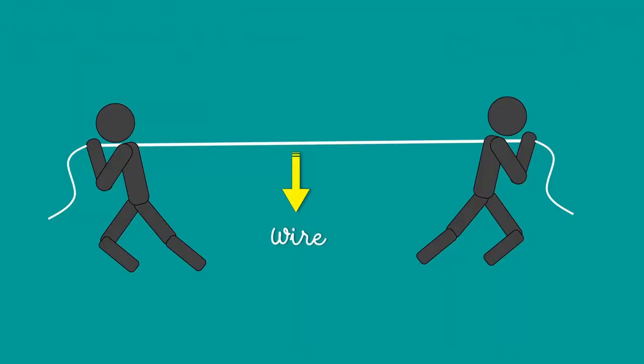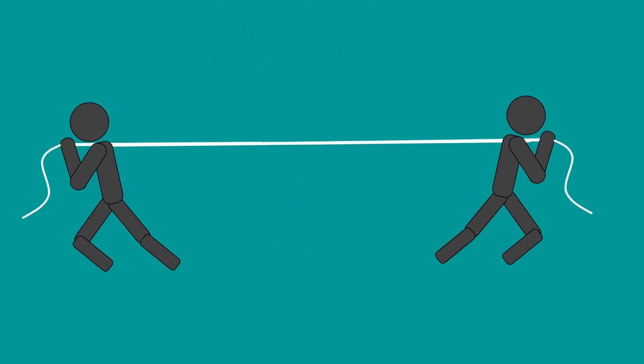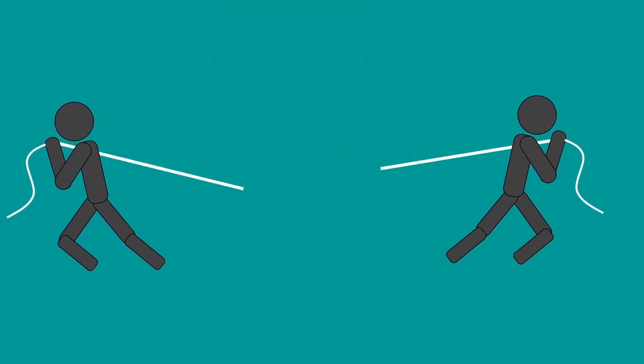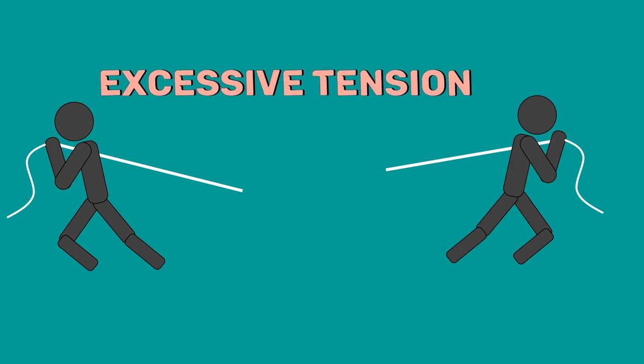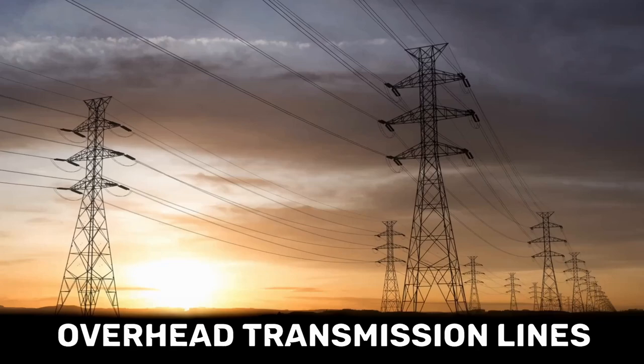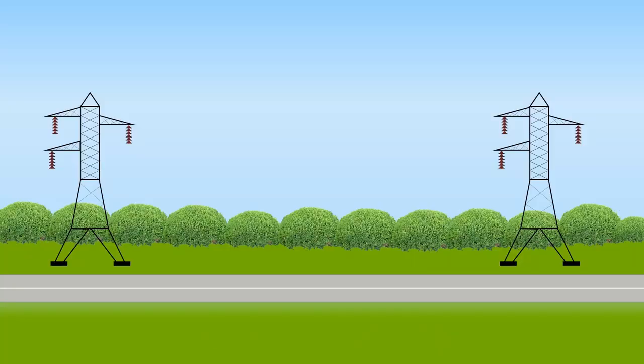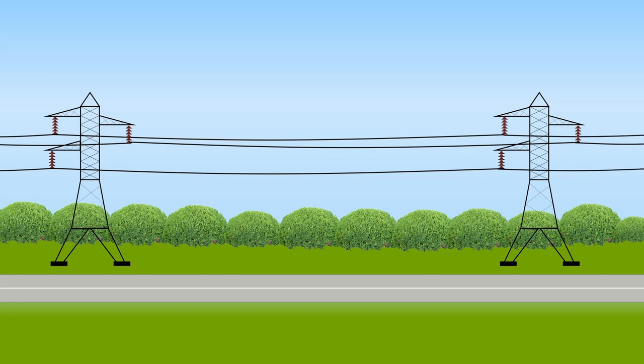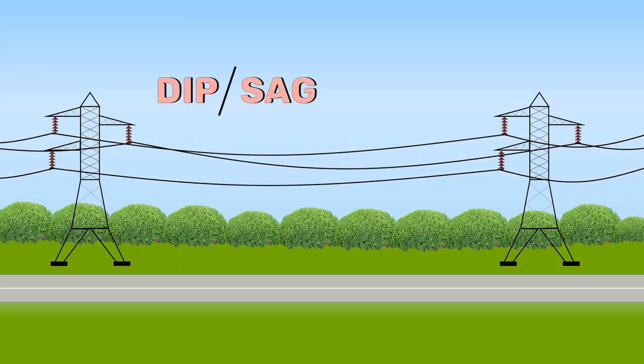Imagine a wire stretched tightly. Now the wire experiences some tension. If it is stretched too much, the wire may break due to excessive tension. The same thing may even happen to our overhead transmission lines. While erecting a transmission line, it is very important that the conductors are under safe tension. Therefore, the conductors are not fully stretched but are allowed to have a dip or sag.